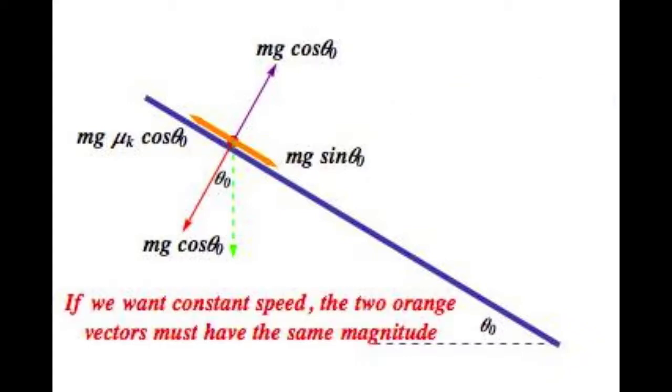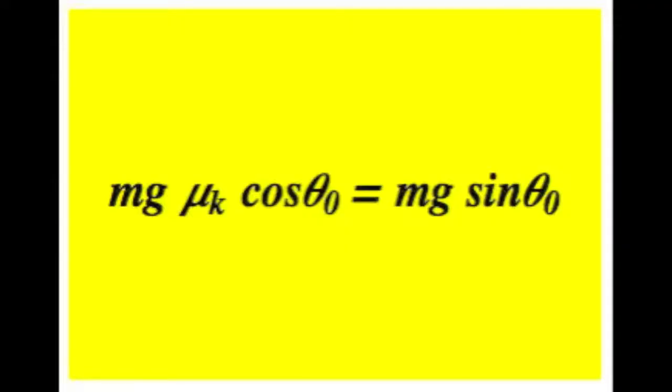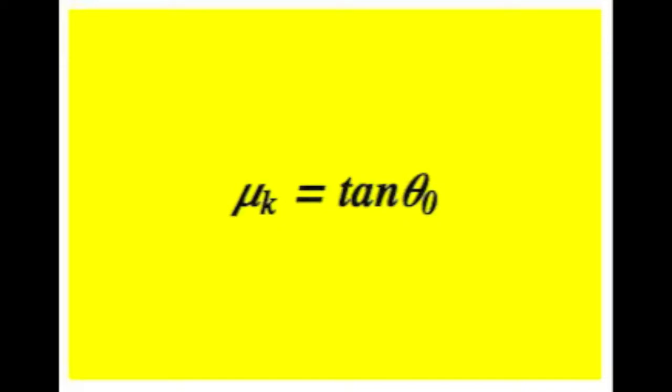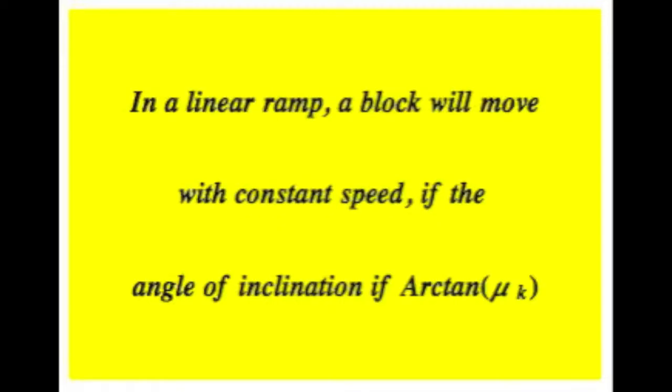If we want constant speed, this equation must hold true. In particular, tangent of theta sub zero must be equal to mu.